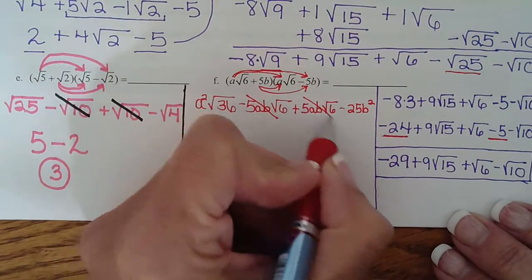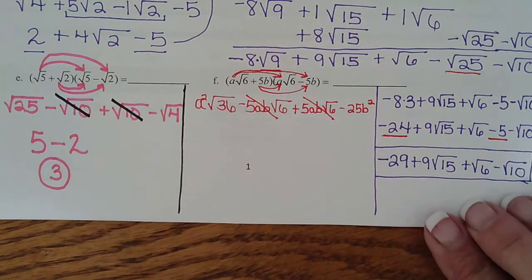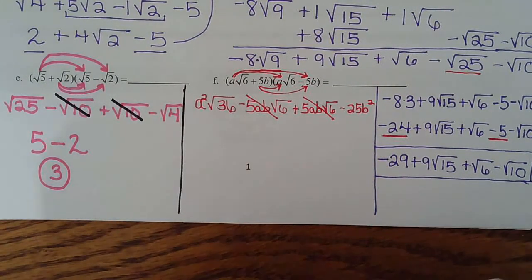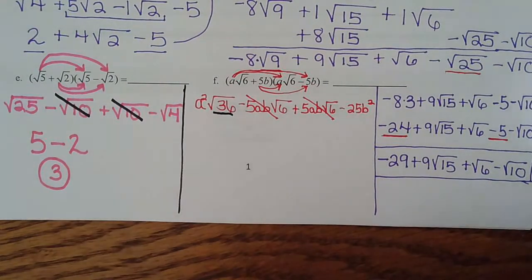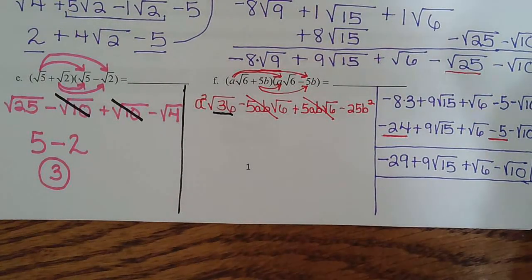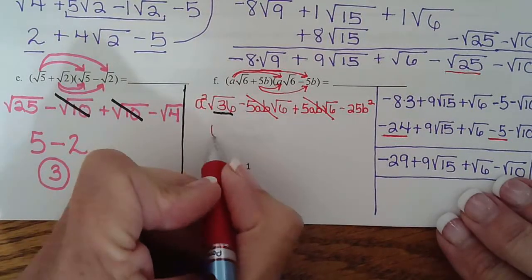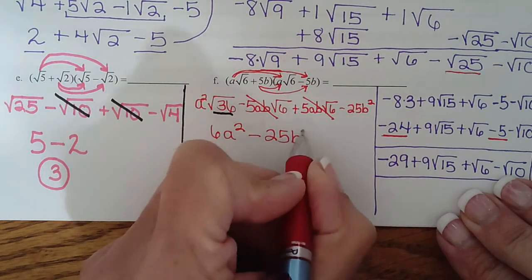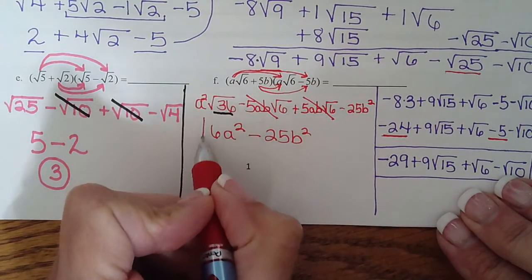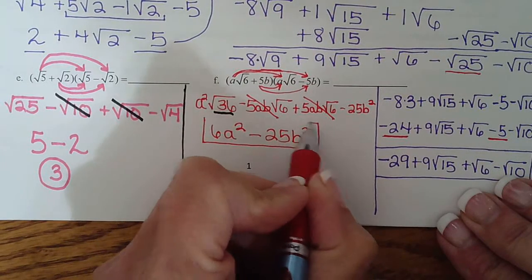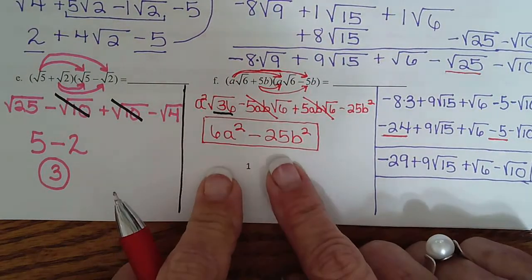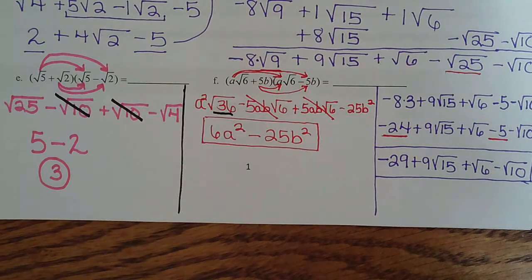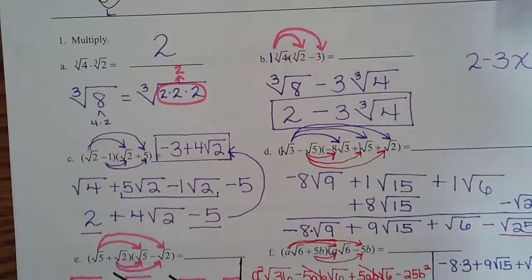Cancel the opposites. 5 minus 5 is 0. That can't be simplified because there's no radical, but this can be simplified. The square root of 36 is 6a squared minus 25b squared. Remember how I said, once you multiply conjugates, there should not be any radicals in your answer. Radicals are gone. Let's go ahead and practice more on the next page.